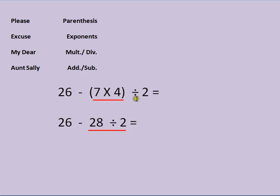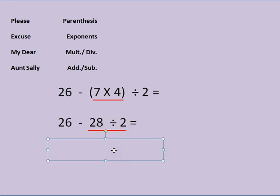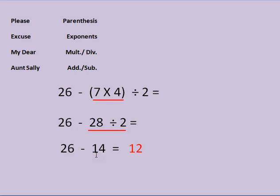Now I have 28 divided by 2. As I look, I don't have any more parentheses and I don't have any exponents, but I do have division and subtraction. So I do my division first: 28 divided by 2 is 14. I simplify the problem again: 6 minus 14... and 26 minus 14 equals 12.